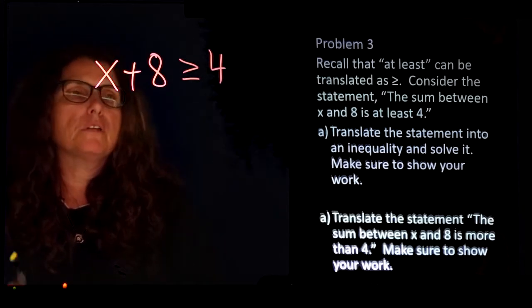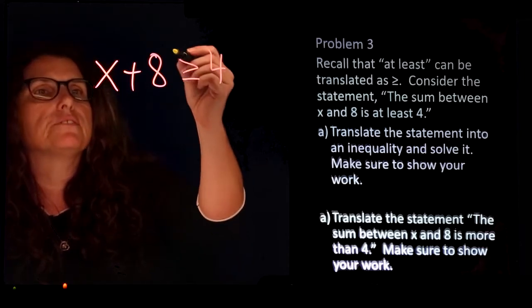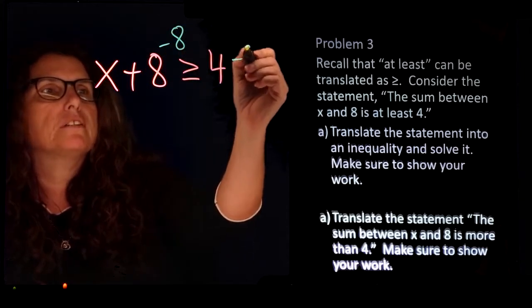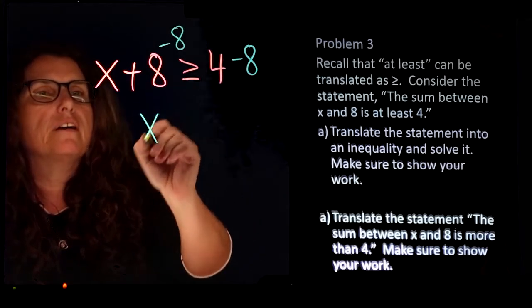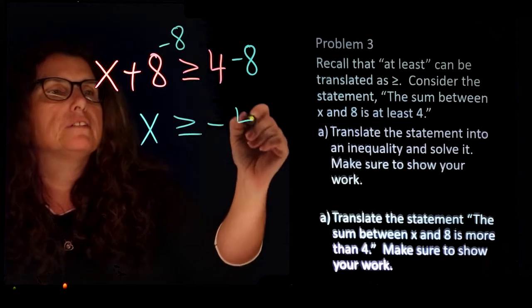Now we're going to solve this problem and graph it, finding the interval notation. To get x by itself, we're subtracting 8 from both sides. x is greater than or equal to negative 4.